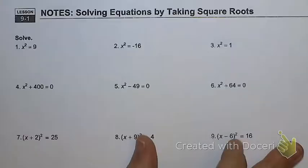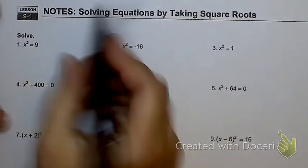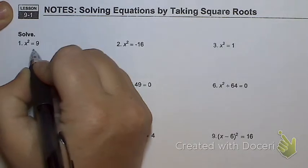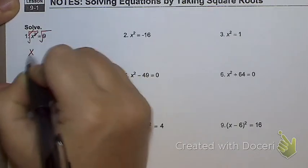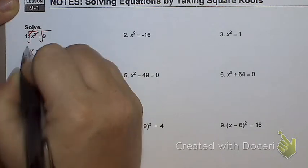So some of these should have been a piece of cake for you, right? Like number one, because what do I do? X equals plus or minus three. Exactly. X equals plus or minus three. Excellent.